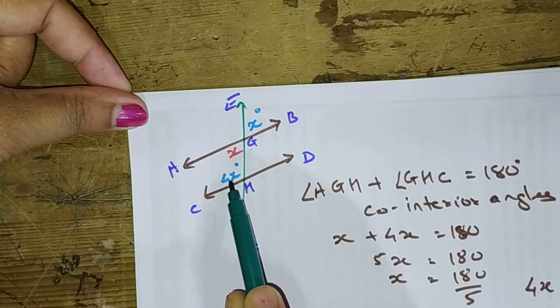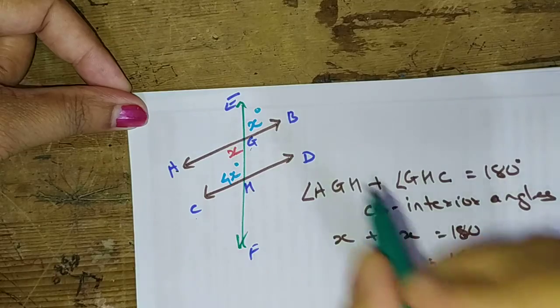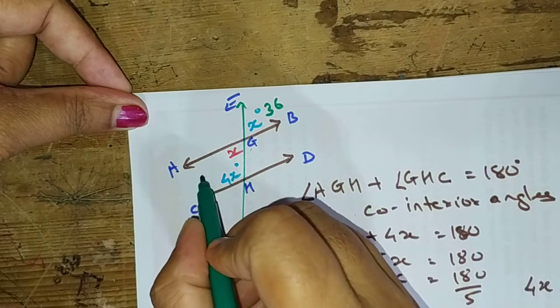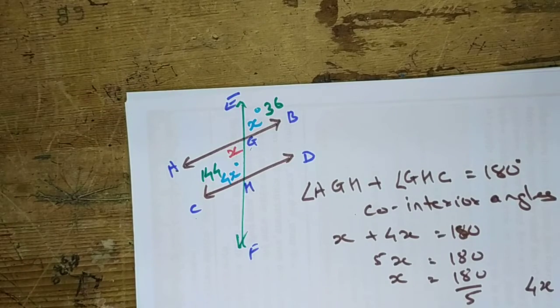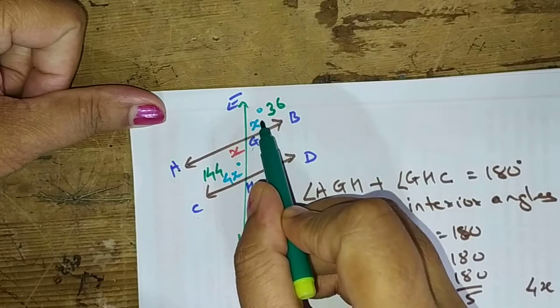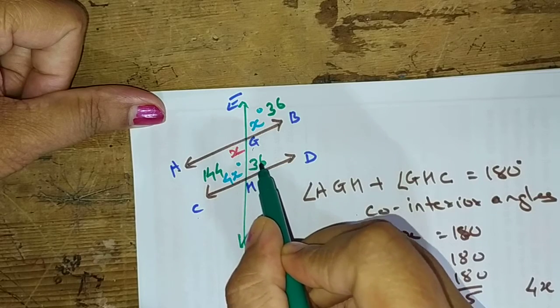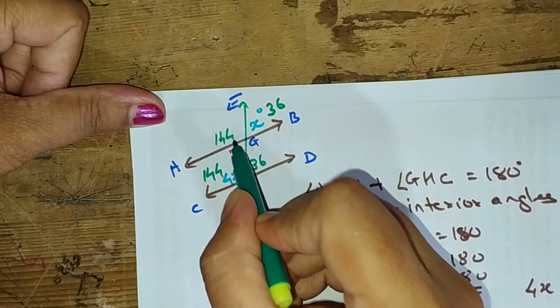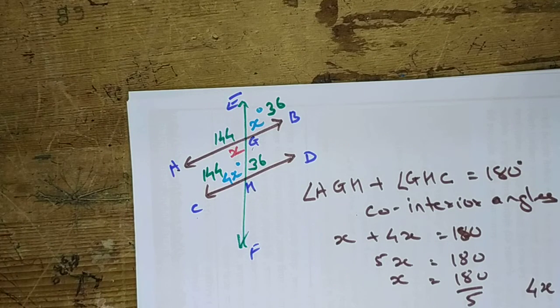You all know that if X is 36 and this is 144, by the information of these 2 angles, as this is 36 corresponding, this is 36. As it is 144, corresponding this is also 144.